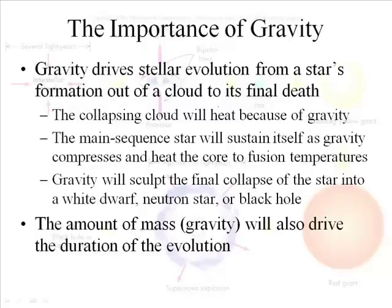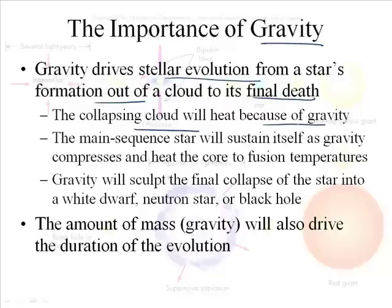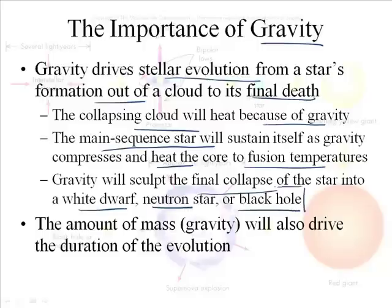Now, the last thing in this particular podcast is what causes everything to happen. And the answer, of course, is gravity. So gravity drives stellar evolution from the star's formation to its death. So it's all about gravity. The collapsing cloud will heat because of gravity. So that's what causes it to heat up. This main sequence star will sustain itself as gravity compresses the heat core to fusion temperatures to get hot enough to fuse. And, it will sculpt the final collapse of the star into a white dwarf, a neutron star, or a black hole. These are the three end results of stars.